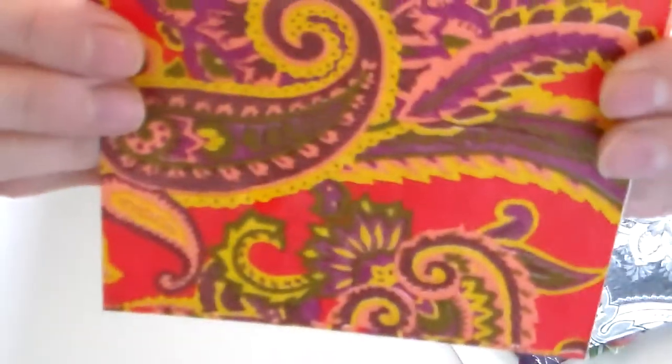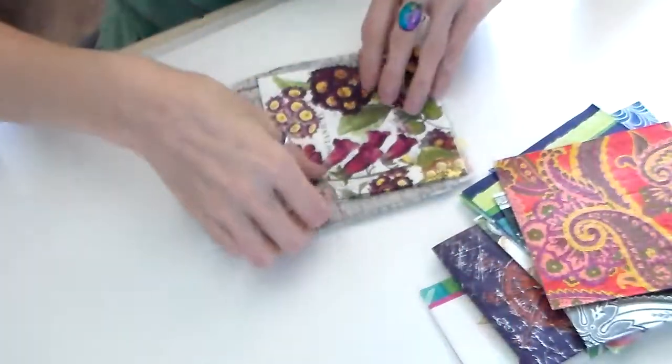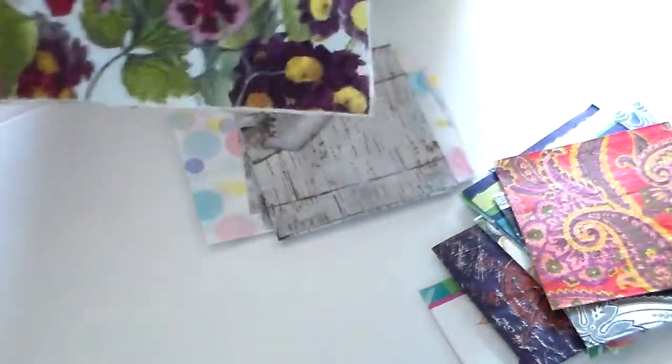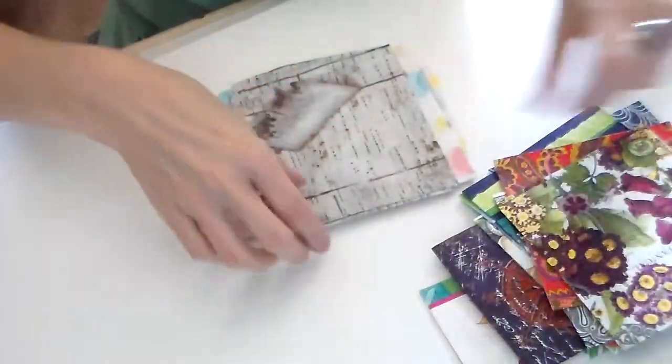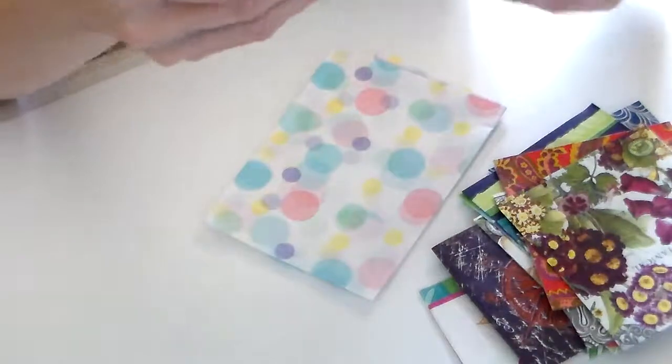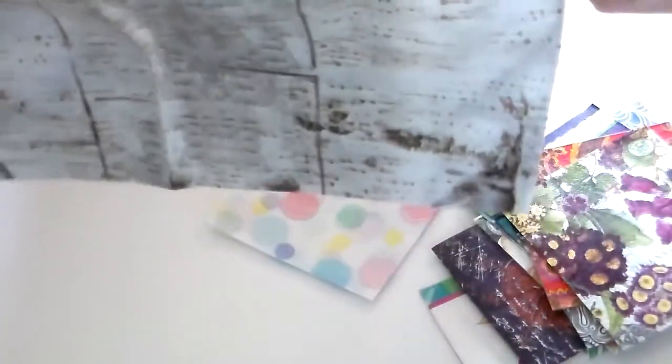Here are paisleys, that's very pretty. More flowers. Ooh, and this is like tissue paper. Kind of like a wood grain, what's that? There's a tree.